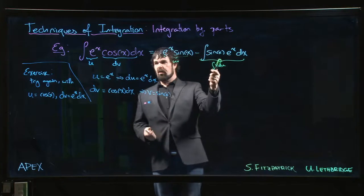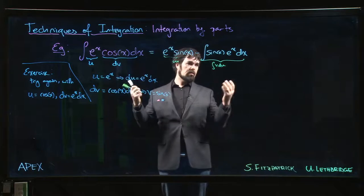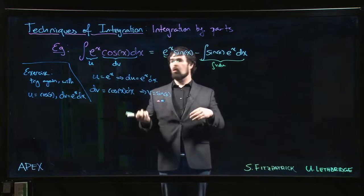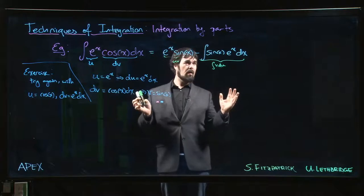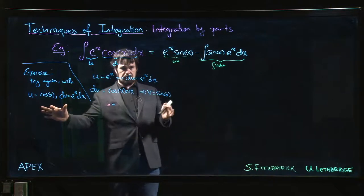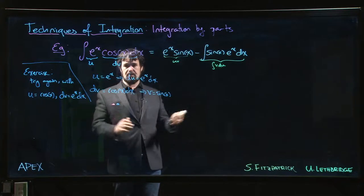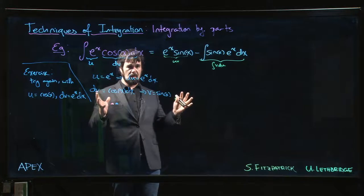And this new integral that we get, we notice that it's, well, it's not all that different from the one we started with. All we've gained is we replace cosine by sine. And you start thinking, like, this is not getting me anywhere. But if you try it this way, you'll find that you're no further ahead. You're at pretty much the same spot. So you really start to wonder, like, how is this going to work out in the end?